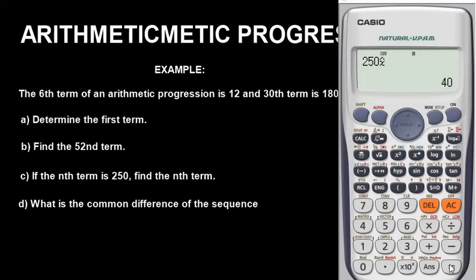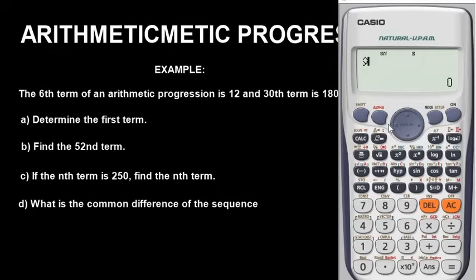To verify that n=40 is correct, go back to the symbol under option 5, press Shift, button 1, and 5. Go in front of the symbol and press 40 — it gives you 250. So n=40 is confirmed correct. This is basically how you solve arithmetic progression with the calculator — very, very simple.